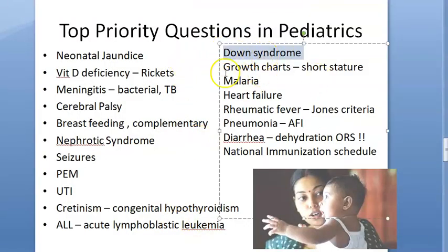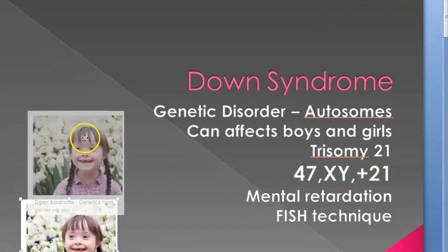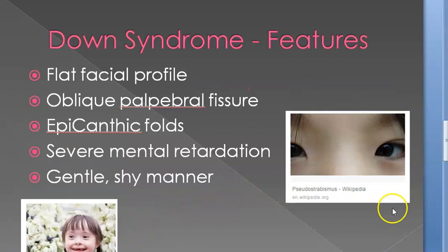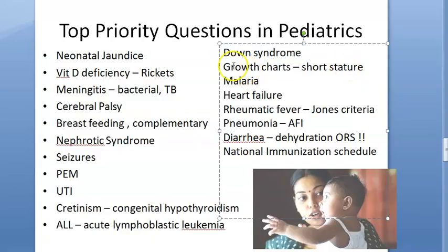Down syndrome: it is autosomal — trisomy 21 — and can affect boys and girls. Know all the features: epicanthal folds, upward slanting eyes, flat nasal bridge, and mental retardation. The most important thing to know is that they can have heart disease.